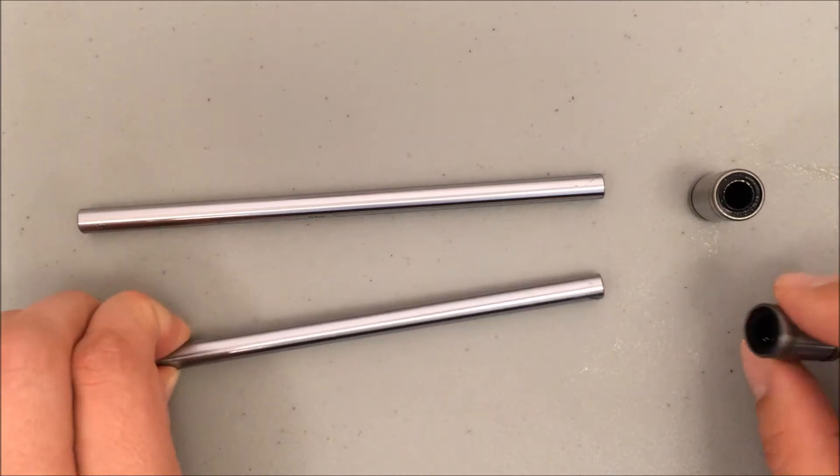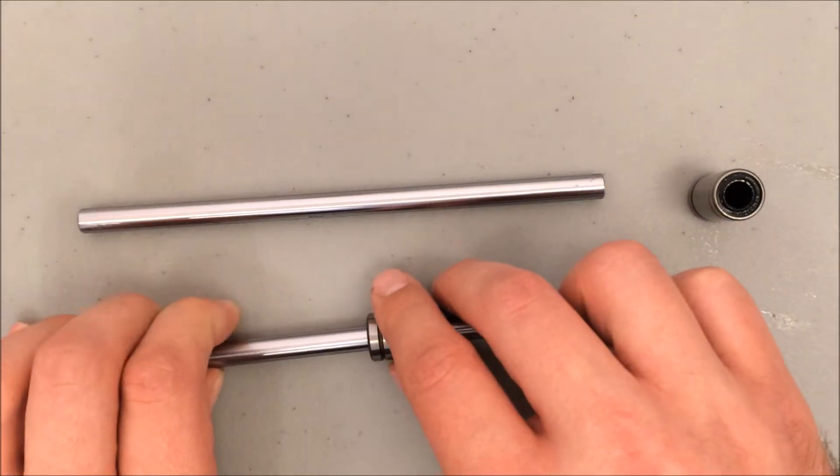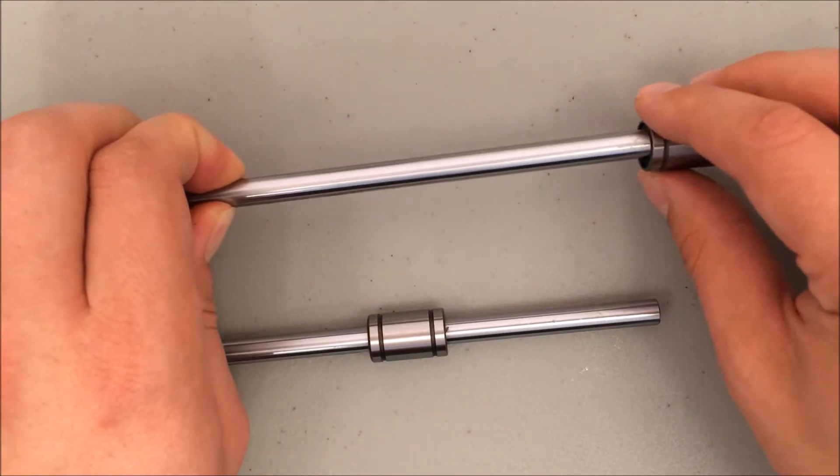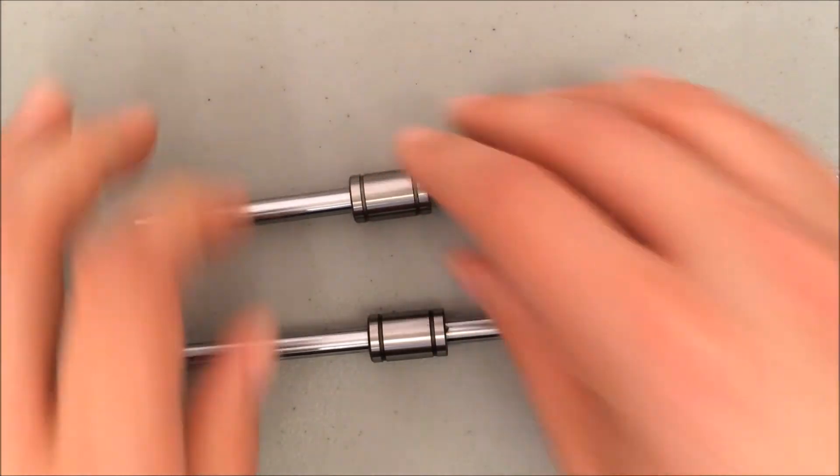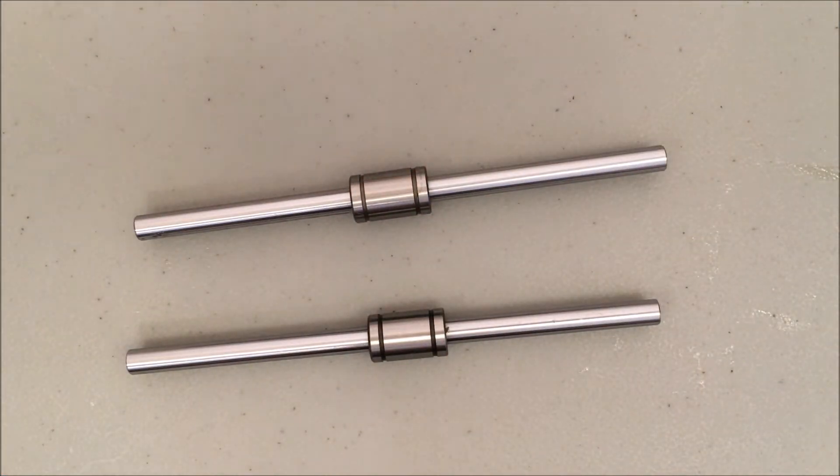Place one linear bearing on each of the smooth rods. You will notice the smooth rods get oily during this step. Do not wipe up that oil—you want that lubrication so the smooth rod will slide freely through that linear bearing.